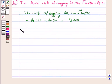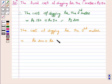The cost of digging for the third meter is equal to rupees 200 plus rupees 50 which is equal to rupees 250.